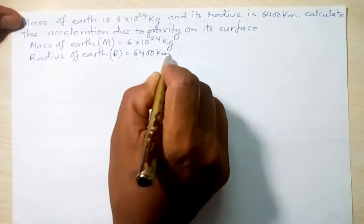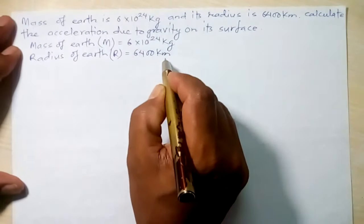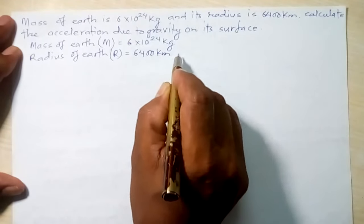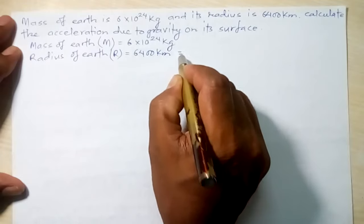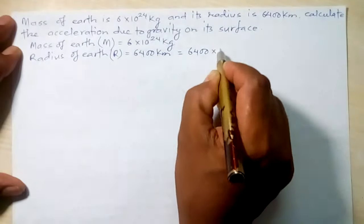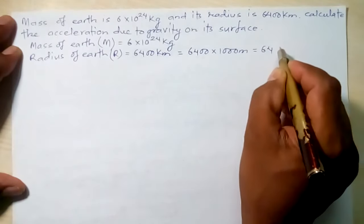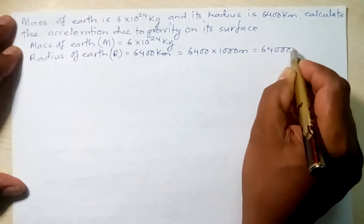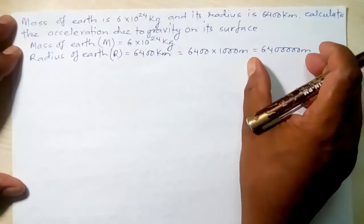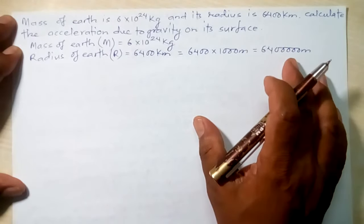R is 6400 kilometers. We are using the SI system where mass is measured in kilograms, so distance should also be in meters. To convert kilometers to meters, we multiply by 1000, giving us 6,400,000 meters.